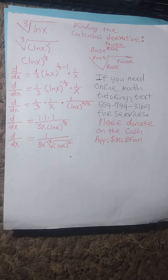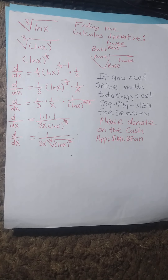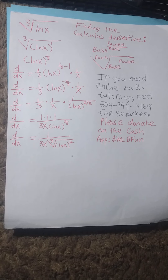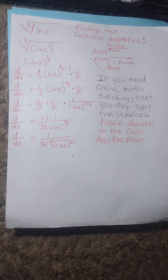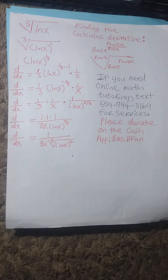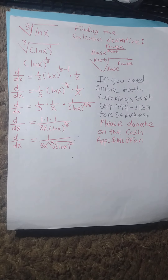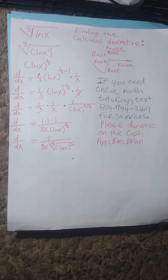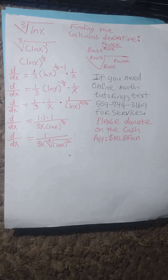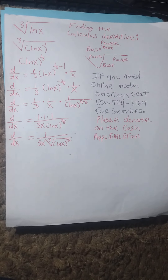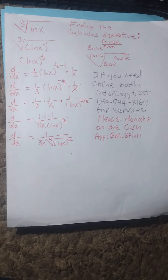When the exponent is negative in the numerator, we put 1 over it and the power becomes positive in the denominator. So the complete derivative is 1/3 times 1 divided by x, times 1 divided by natural log of x to the 2/3 power. This simplifies to 1 divided by 3x times natural log of x to the 2/3 power.